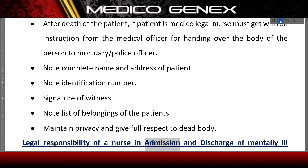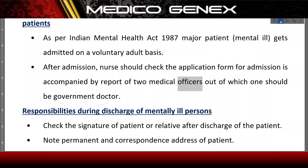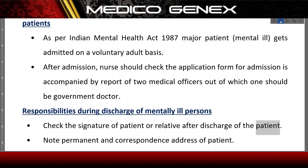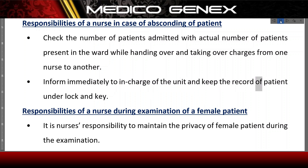Legal responsibility of a nurse in admission and discharge of mentally ill patients: As per the Indian Mental Health Act 1987, a major mentally ill patient gets admitted on a voluntary adult basis. After admission, the nurse should check that the application form for admission is accompanied by the report of two medical officers, out of which one should be a government doctor. During discharge, check the signature of the patient or relative. Note the permanent and correspondence address of the patient. In cases of absconding, check the number of patients admitted against the actual number present in the ward while handing over and taking over charges. Inform the in-charge of the unit immediately and keep the record of the patient under lock and key.